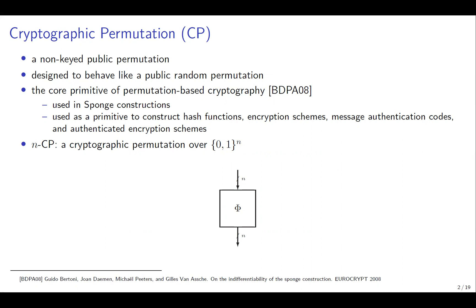This talk is about cryptographic permutations, or NCP. This is a non-keyed public permutation, designed to behave like a public random permutation. It is a core primitive of permutation-based crypto, used in sponge constructions and as a primitive to construct hash functions, encryption schemes, message authentication codes, and authenticated encryption schemes. We will write NCP for a cryptographic permutation over N bits.